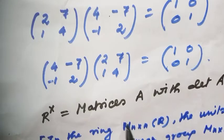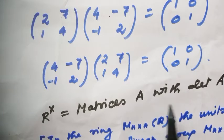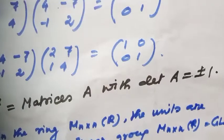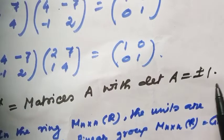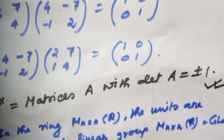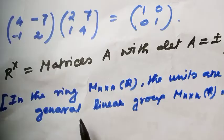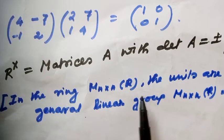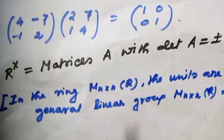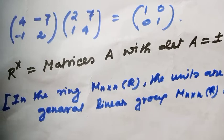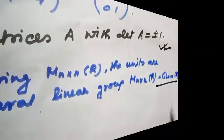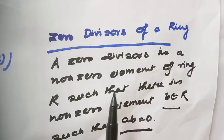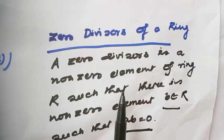Therefore this ring has an infinite group of units, and these are precisely those matrices whose determinant is ±1. In general, for n×n matrices, the units form the general linear group.